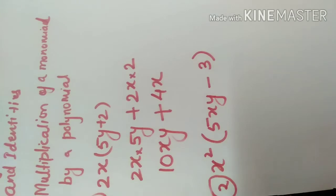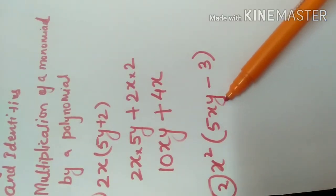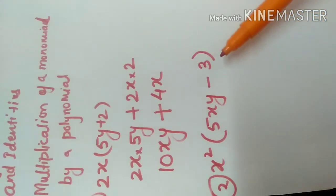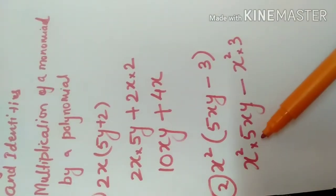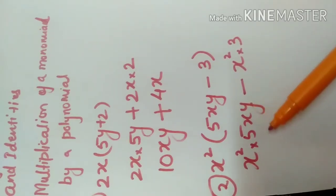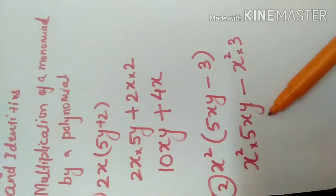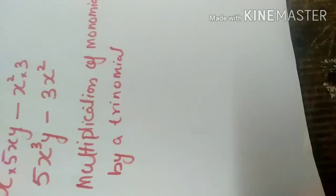Let's see one more example. Here x squared will be multiplied to 5xy, and then x squared will be multiplied to minus 3. So x squared into 5xy gives 5x cubed y, and x squared into minus 3 gives minus 3x squared. The product is 5x cubed y minus 3x squared.